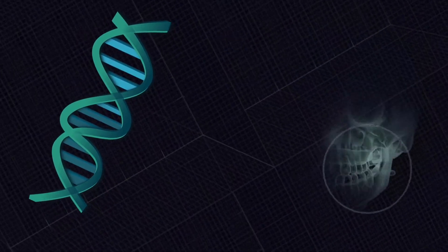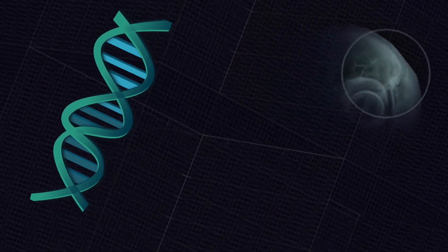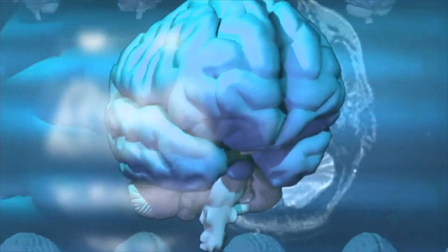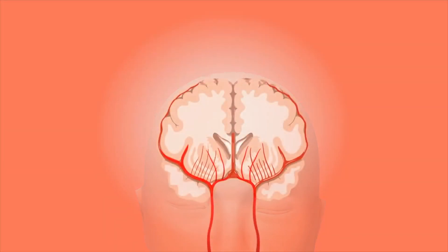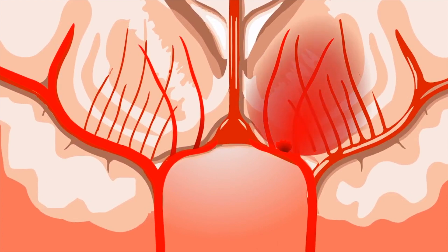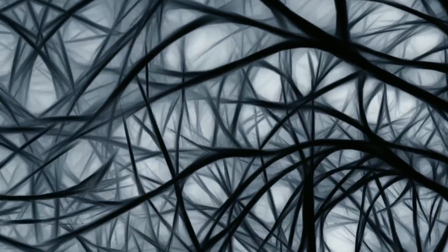Genes also have a proof-reading mechanism to make sure that this information transfer is error-free in nerve cells in the brain's cerebellum. But as we age, this corrective ability declines and errors creep in, leading to the build-up of improper proteins which cause neurological disorders.